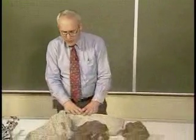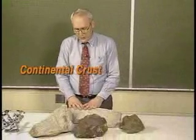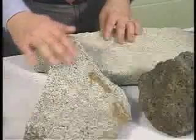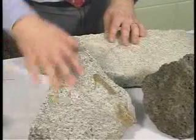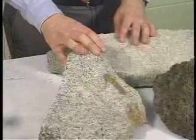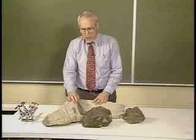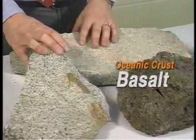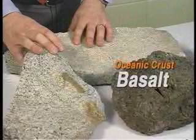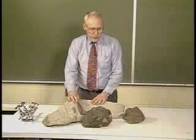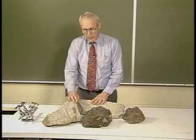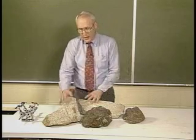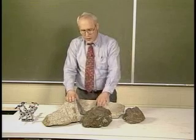When we try to characterize the rocks of the continental crust, we describe them as being granitic in composition. Granite, this kind of rock here, is a granitic composition rock. On the other hand, the rocks of the oceanic crust are described as basalt, and this is an example of basalt — lava rock, lava as most of us would probably recognize and describe it. These rocks are quite different in appearance: this characteristic of continental crust, this of oceanic crust.